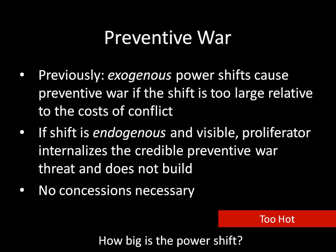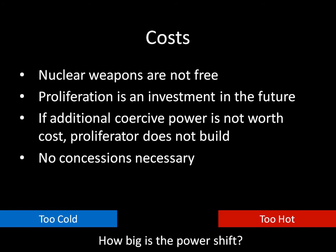The second explanation is the costs of developing a nuclear weapon. Nuclear weapons are not free. This is a good moment to pause. The United States was the first country to develop a nuclear weapon and has had a program for more than 70 years. Think about all the money the United States has spent on nuclear weapons in its history, and think about what other things the United States government has spent more money on.